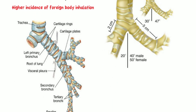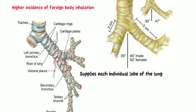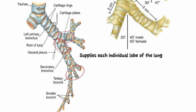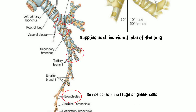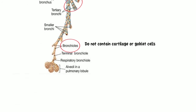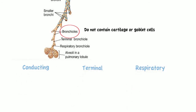The main bronchi undergo further branching, forming the secondary bronchi, which supply each individual lobe of the lung. The secondary bronchi then divide into tertiary bronchi, then into smaller airways called bronchioles, which do not contain cartilage or goblet cells. Bronchioles are divided into conducting, terminal, and respiratory bronchioles.